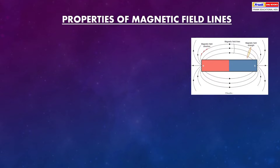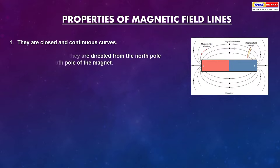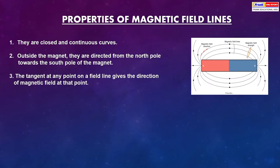Properties of magnetic field lines: They are closed and continuous curves. Outside the magnet, they are directed from the north pole towards the south pole of the magnet. The tangent at any point on a field line gives the direction of magnetic field at that point. They never intersect one another.